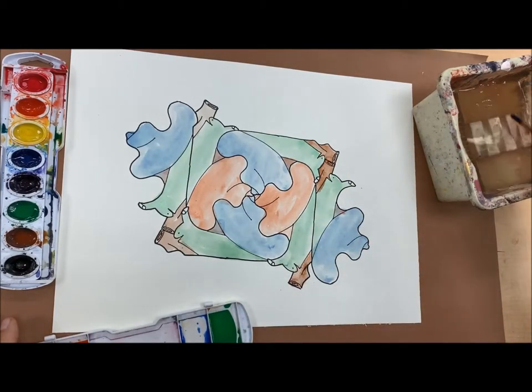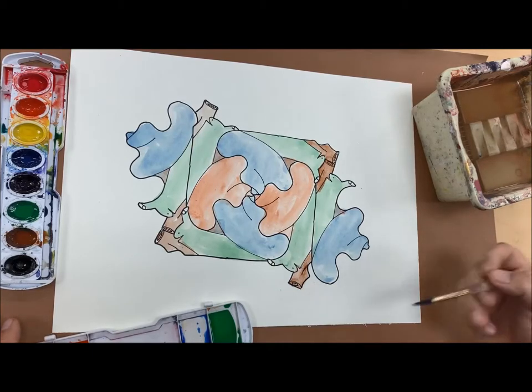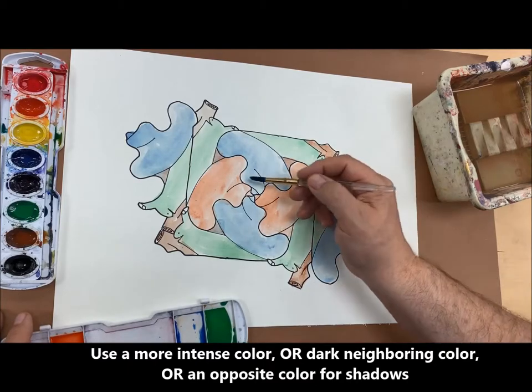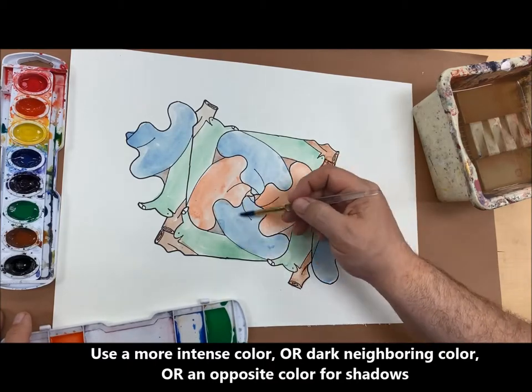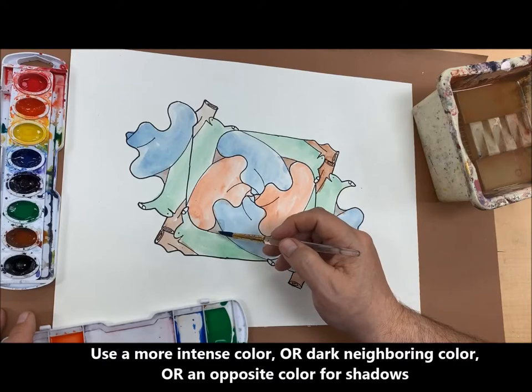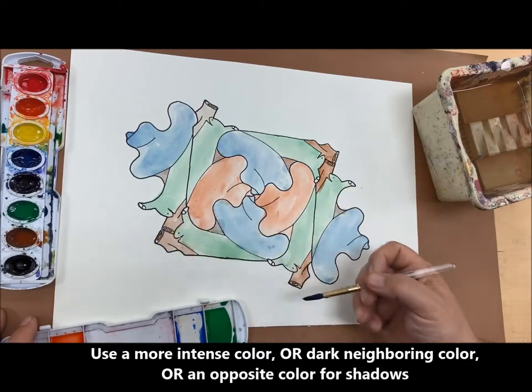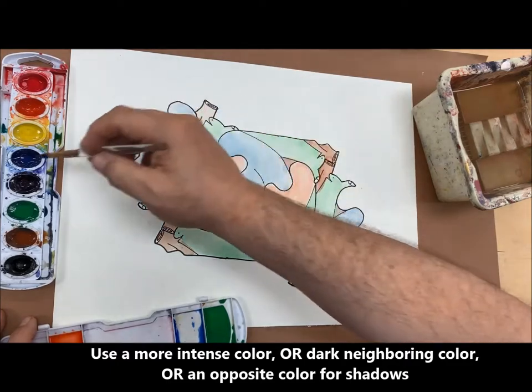Now I can play with intensifying my colors. If I want to show off a shadow there's these little bubbles on the shell. I could use the brown, which is a mix of my opposite colors, or I could use a more intense color of that blue. And I think that's what I'm going to do. I'm going to steal some blue, add that to my water, and it's going to be more intense.